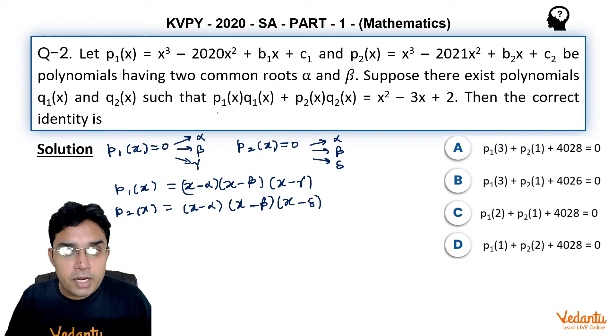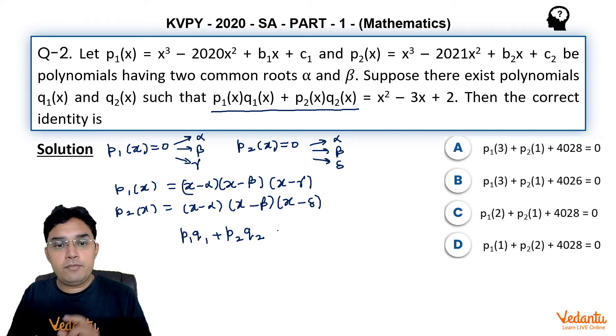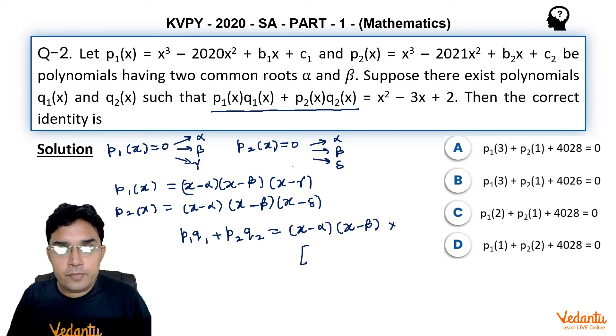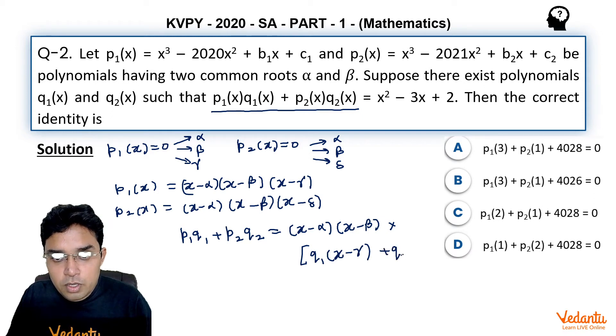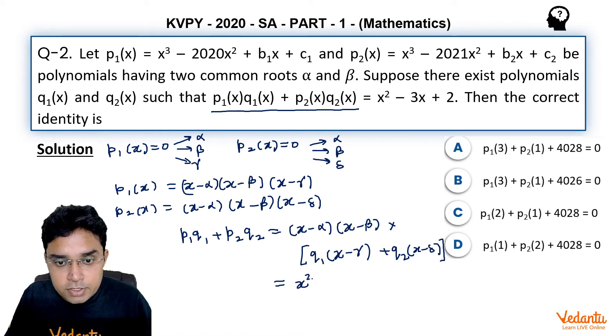Now we are given one more relation here, which is p₁q₁ + p₂q₂. Because p₁ and p₂ both have two common roots α and β, I can write (x - α)(x - β) by taking common, and into we will be having q₁ multiplied with (x - γ) plus q₂ multiplied with (x - δ).